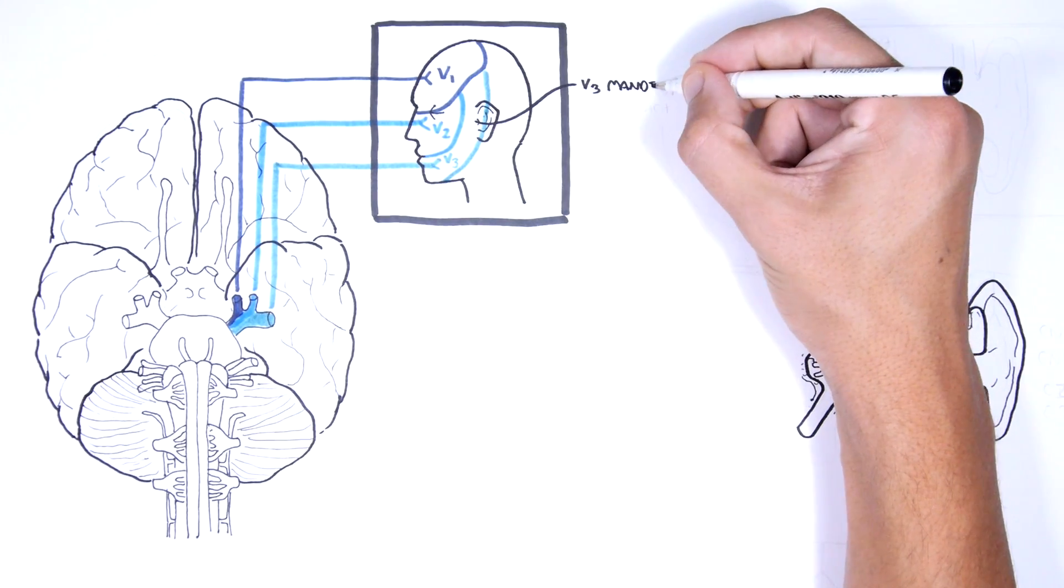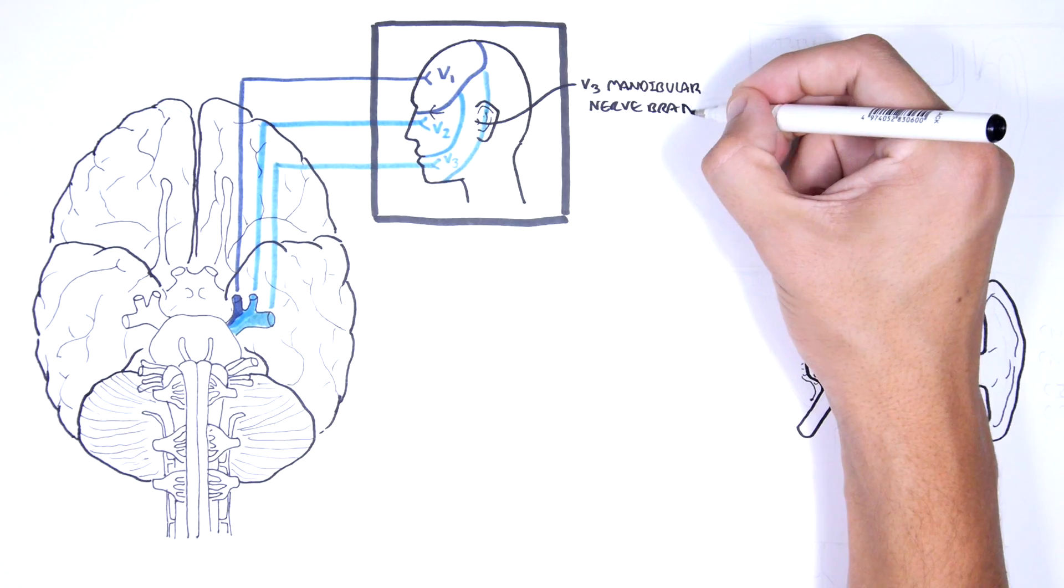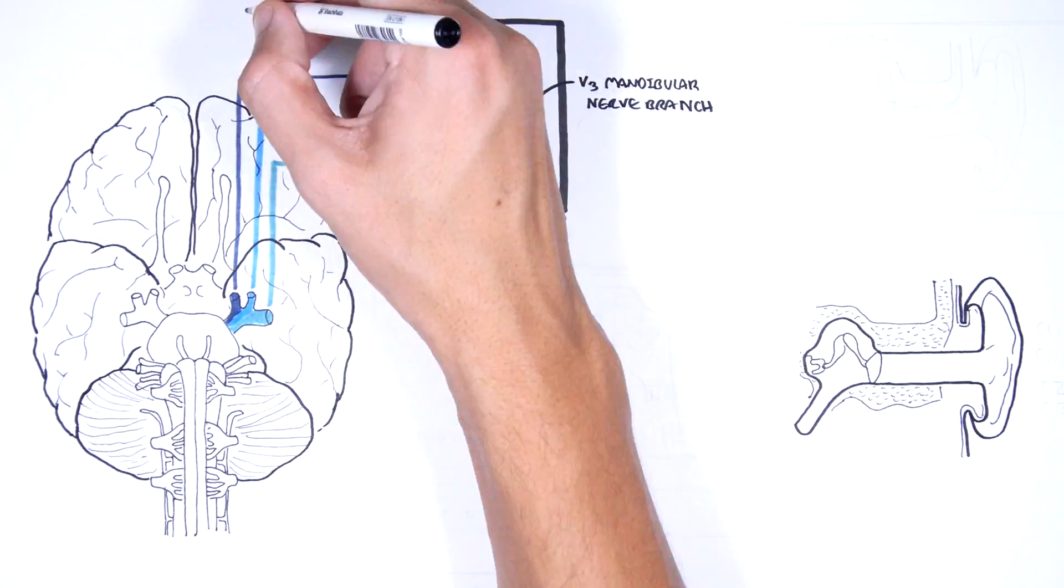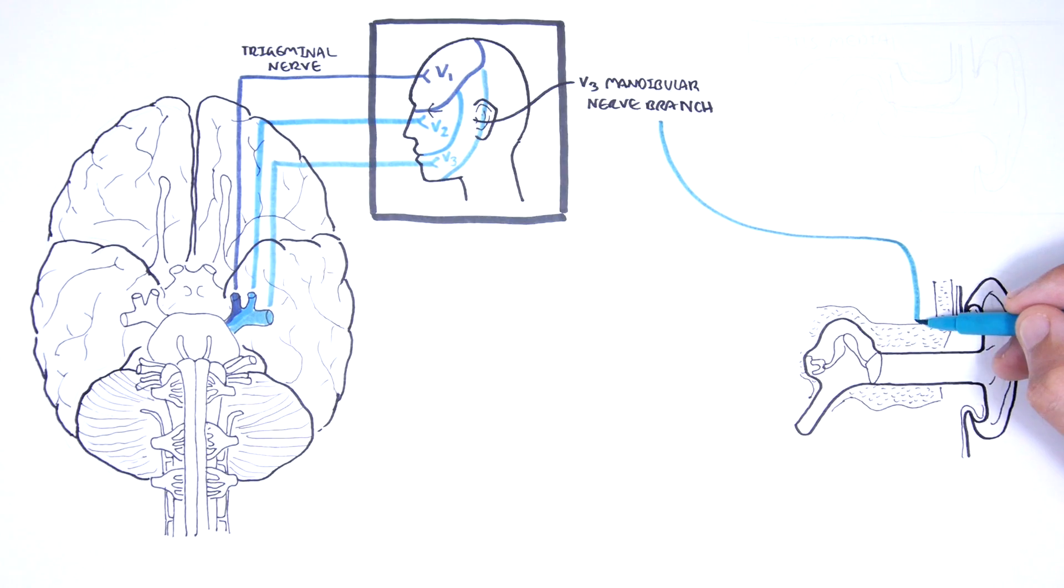The third branch of the trigeminal nerve, V3, is the mandibular nerve and it innervates part of the external ear. This means it also innervates the auricle and external acoustic meatus, the ear canal.